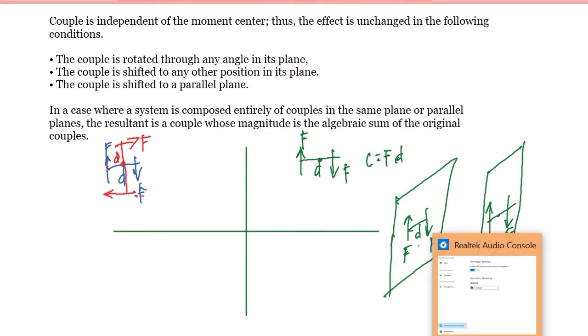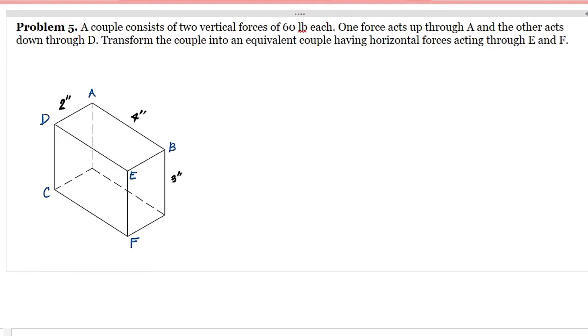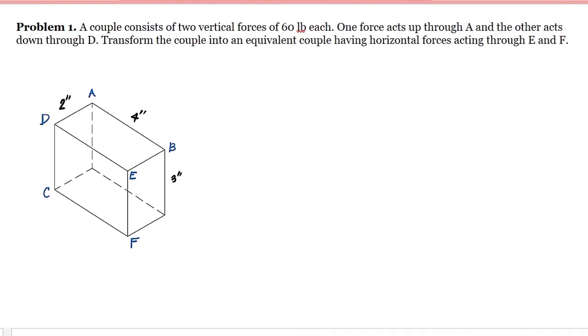So let's have an example for this. Problem number 1: A couple consists of two vertical forces of 60 pounds each. One force acts up through A and the other acts down through D.